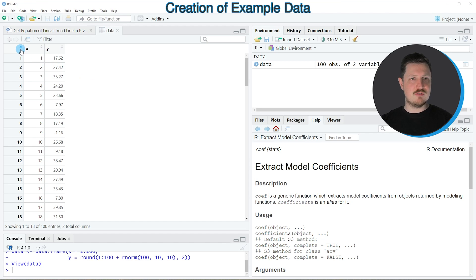As you can see, our data frame contains two columns called X and Y. The column X ranges from 1 to the number of rows of our data frame, and the column Y contains random numeric values.